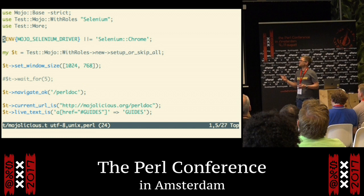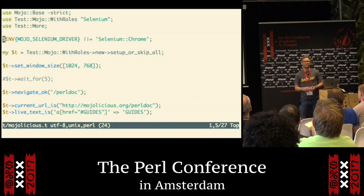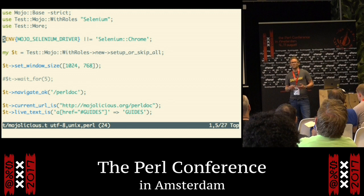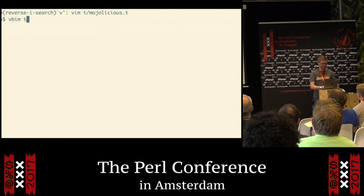The thing about this test is just showing you that instead of running it against your local application, which you normally do with TestMojo, you can run it against an external web page. The idea is that if you have a complex setup with reverse proxies and load balancers, there might be a bug in production that you don't spot inside your test suite. So you can fire up the same tests and run it against your live platform.